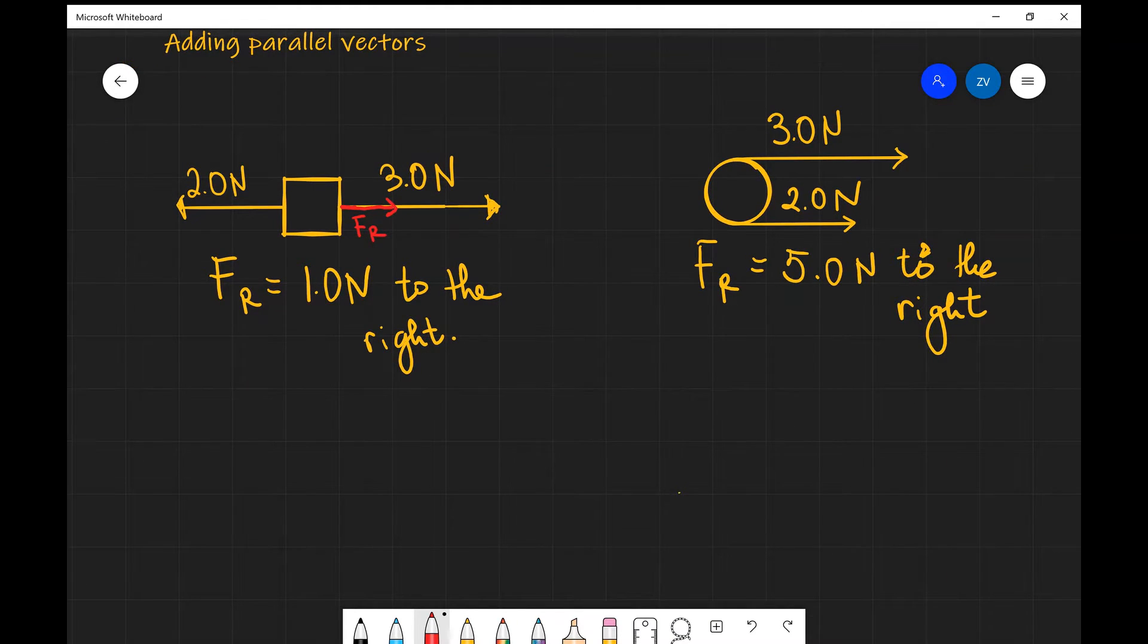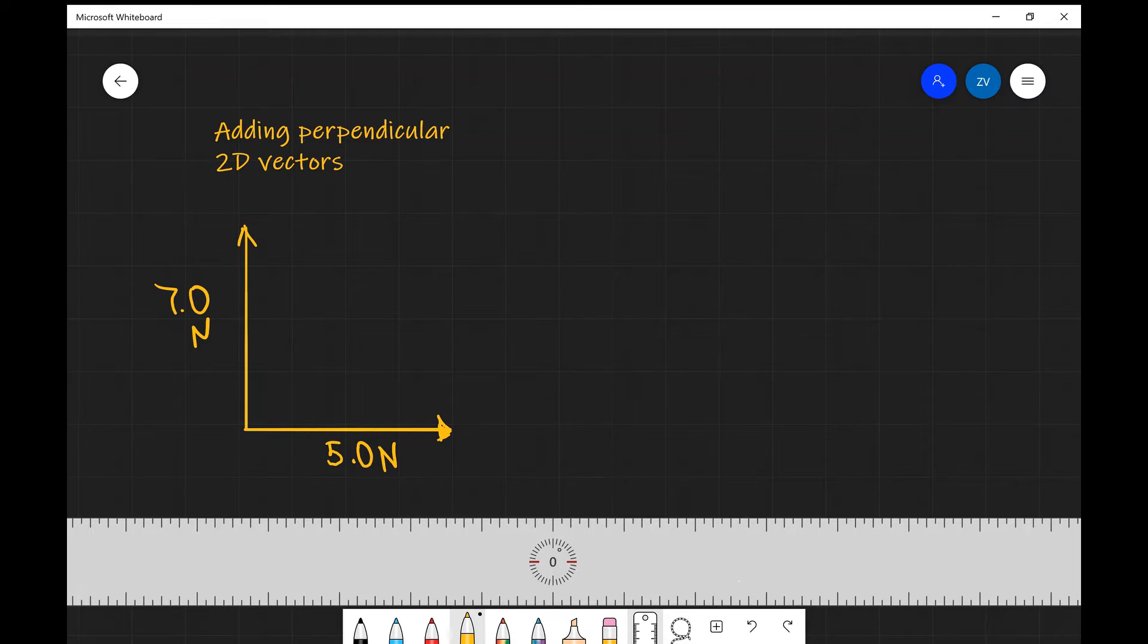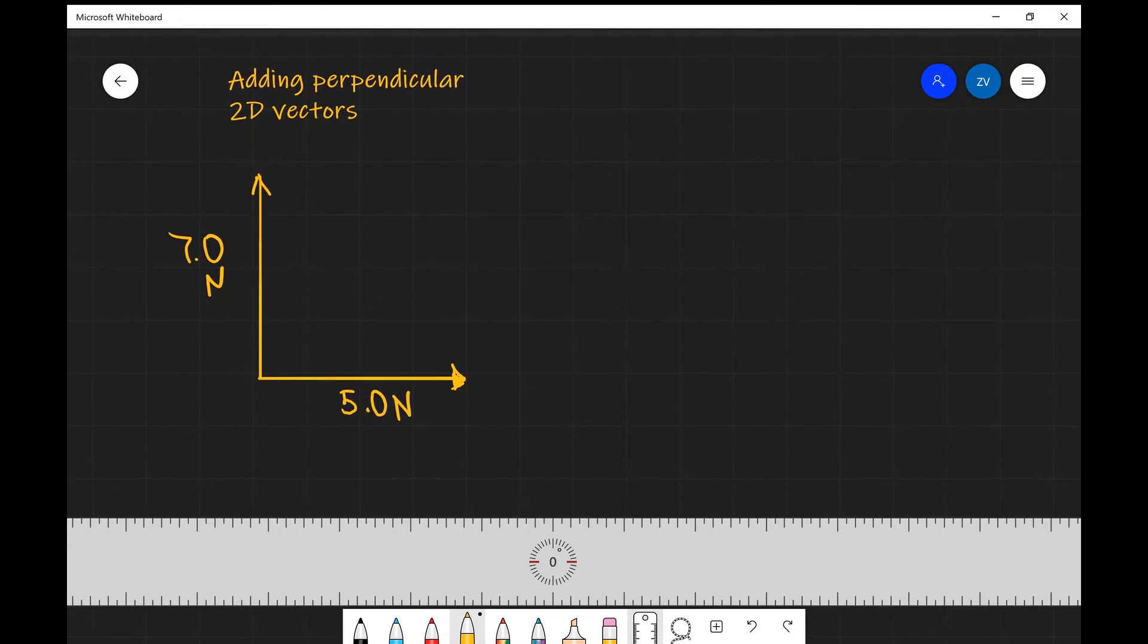now let's have a look at a slightly more complicated case in which we are looking at vectors in two dimensions. The next case which we're going to be looking at is adding two perpendicular 2D vectors.